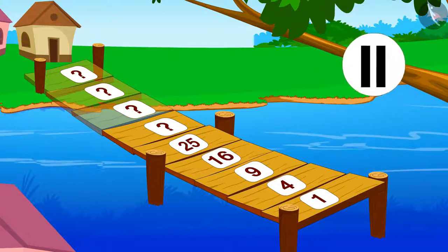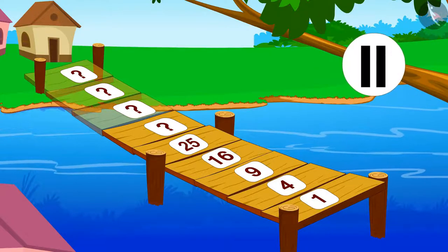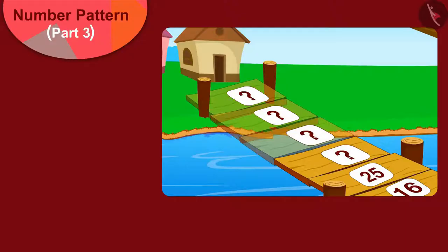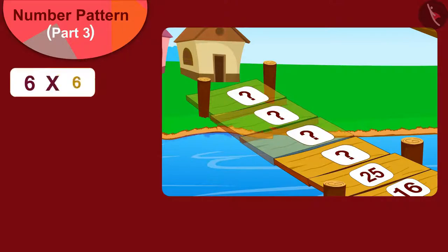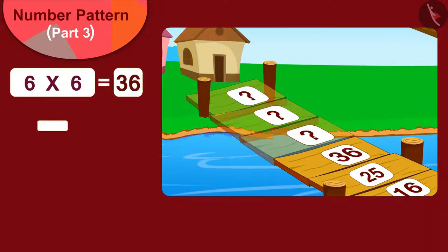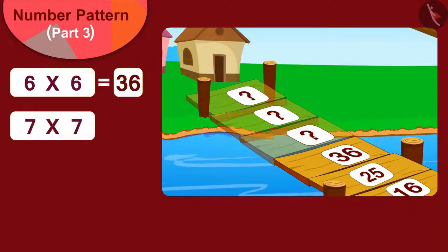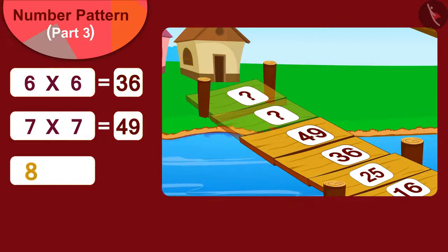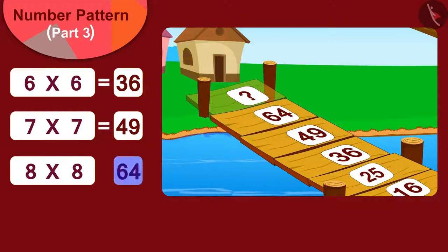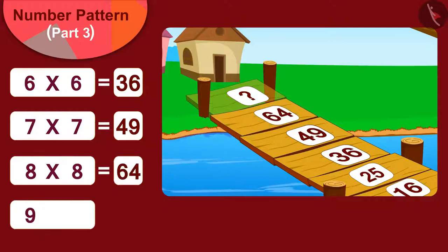Yes, the remaining four planks of the bridge will be numbered: six times six equals thirty-six, seven times seven equals forty-nine, eight times eight equals sixty-four, and nine times nine equals eighty-one.